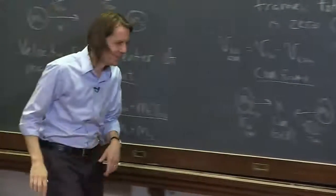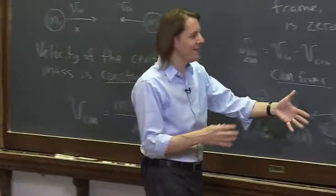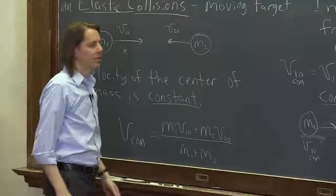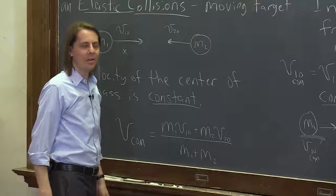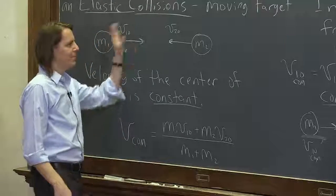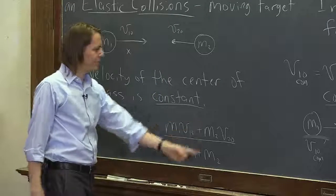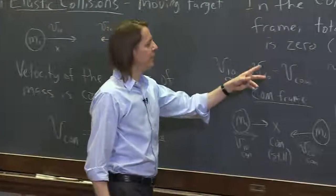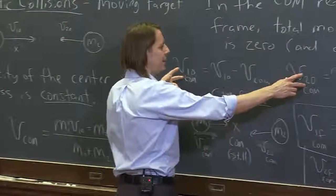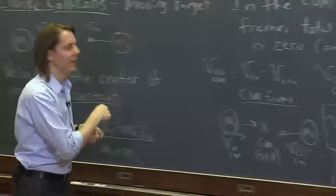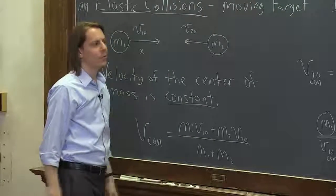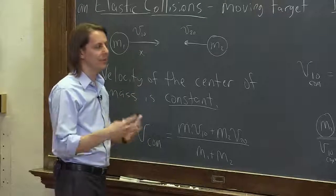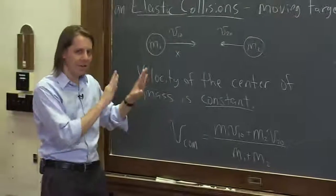All this complicated talking was to show you how easy the problem is in the center of mass frame. If you're given this problem — two masses come together, what happens? — all you do is calculate the COM velocity using the formula, convert each velocity into the COM frame, stick negative signs on them, and convert back. That tells you how fast each mass goes after the collision. It greatly simplifies these problems — you don't have to think separately about momentum and energy. It's a mechanical procedure; I just wanted you to understand where it comes from.